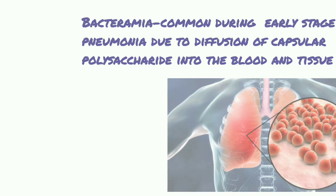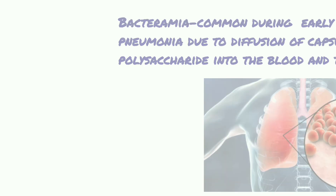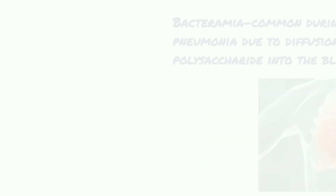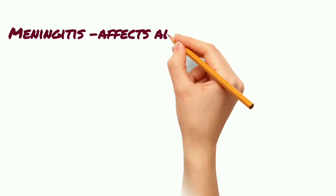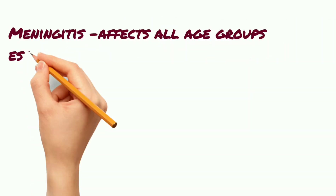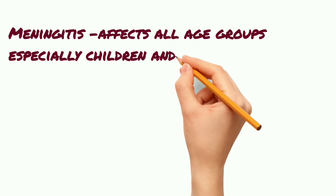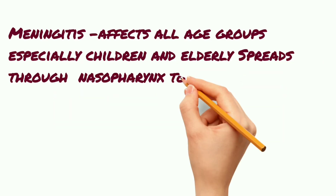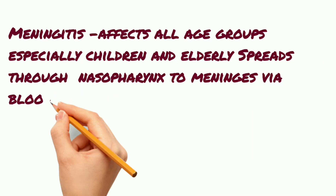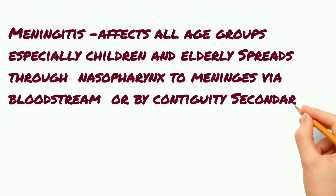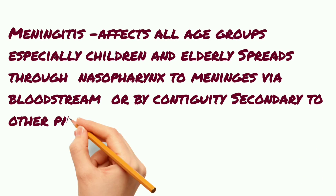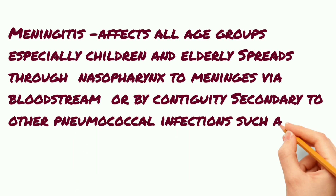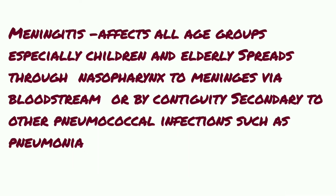Next is meningitis. It affects all age groups, especially children and the elderly. It spreads through the nasopharynx to meningitis via the bloodstream, or by contiguity secondary to other pneumococcal infections such as pneumonia.